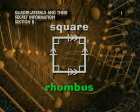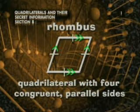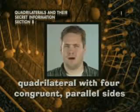A square is a form of rhombus. A rhombus is any quadrilateral with four congruent parallel sides. And by the way, the plural form of rhombus is rhombi.